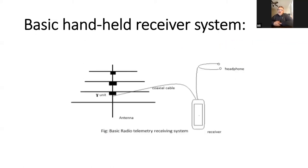Here's a basic schematic of how a handheld receiver system is set up. You have your antenna connected via coaxial cable to the receiver. You need some kind of speaker — either headphones or the external speaker built into the receiver — to hear the signal. This complete system, programmed to the correct megahertz for your target transmitters, is what you need to go out and find an animal.